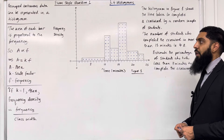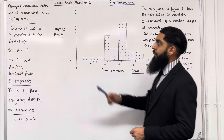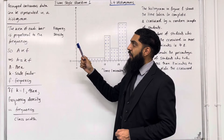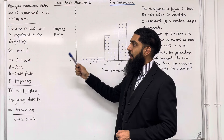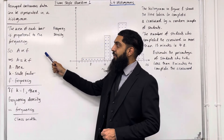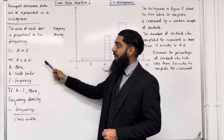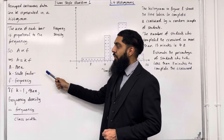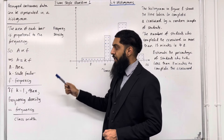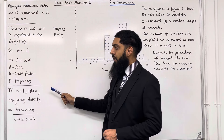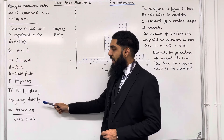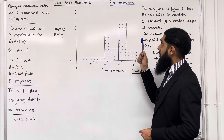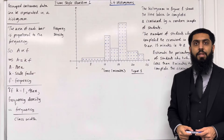What are the key properties of a histogram? Number 1: grouped continuous data can be represented in a histogram. Number 2: the area of each bar in a histogram is proportional to the frequency. Mathematically, A is proportional to F, which implies A equals KF, where A is the area, K is the scale factor, and F is the frequency. Number 3: if K equals 1, then the frequency density is given by frequency divided by class width. These are the key facts of 3.4 Histograms, which I'll be implementing in exam-style questions.